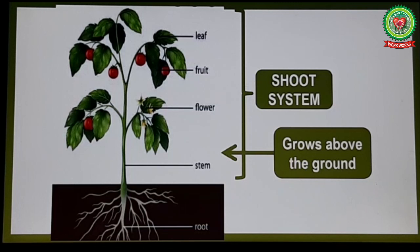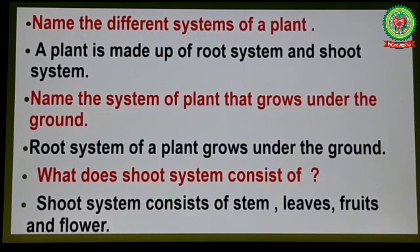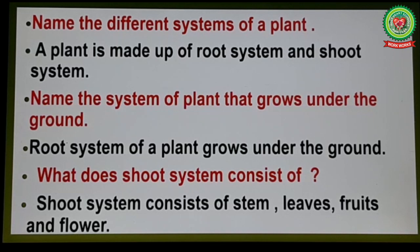Now let's revise. Name the different systems of a plant: a plant is made up of the root system and the shoot system. Name the system of a plant that grows under the ground: the root system grows under the ground. What does the shoot system consist of? The shoot system consists of stem, leaves, fruits and flower.